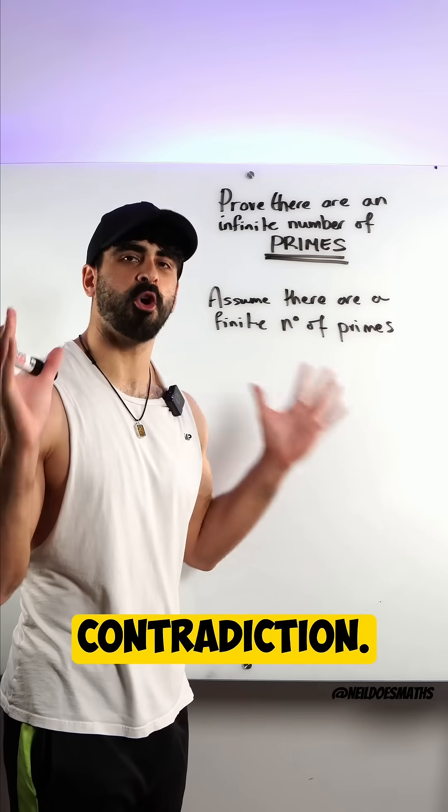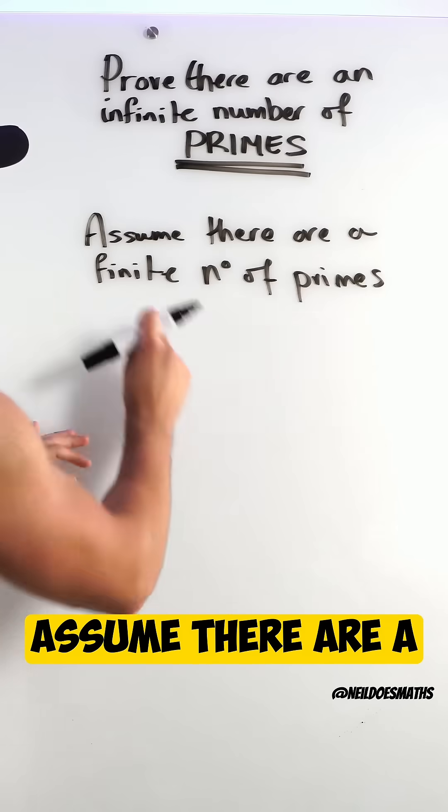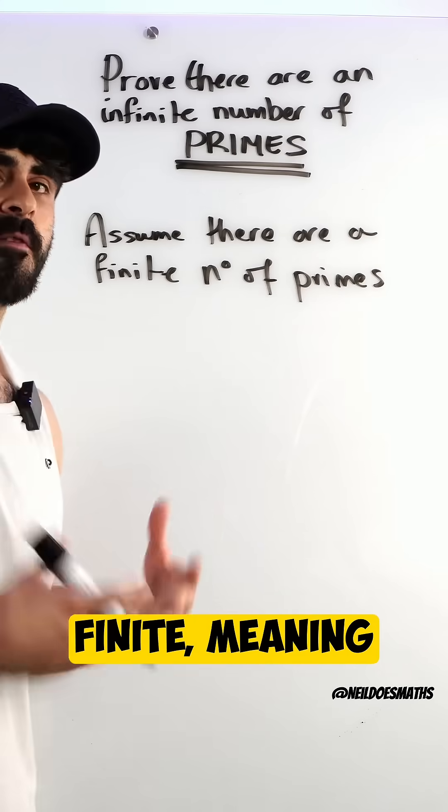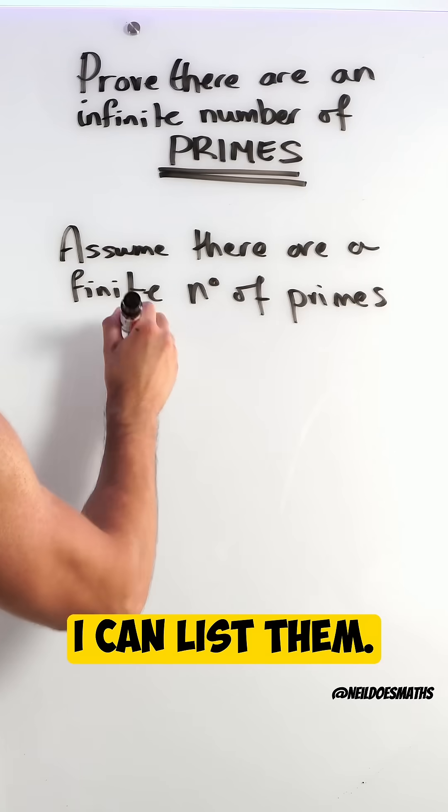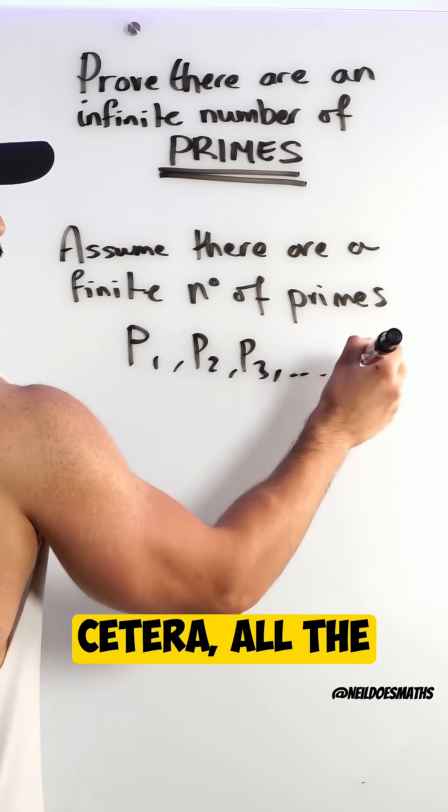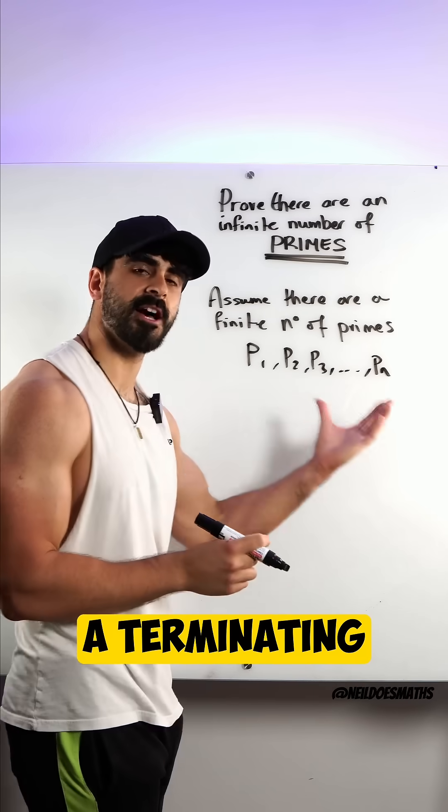To do this proof, we're going to use contradiction. I'm going to assume there are a finite number of primes—finite meaning I can list them: p1 all the way to pn. It's a terminating number of primes.